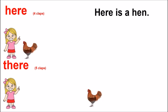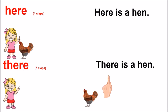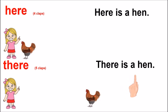There is the hen. Woh dekho. Woh haan par hai hen. Now, read the sentence. There. Is. A. Hen.